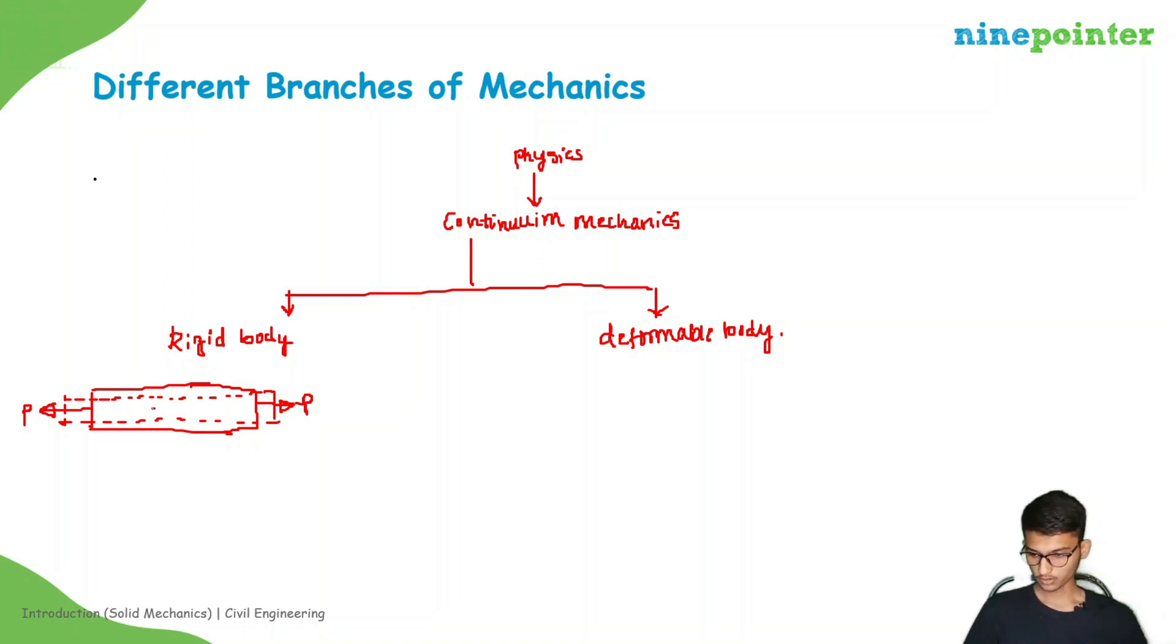Before application of the load, suppose we consider two points A and B, the distance between them is D. Now the bar length increases. This means that the distance between the two particles before application of the load will now increase. Because the change in length is positive, these two particles will move away. The distance will be D prime, and D prime will be greater than D. That means there is change in distance between two particles. Then we won't call it as a rigid body. This is the example for change in size.